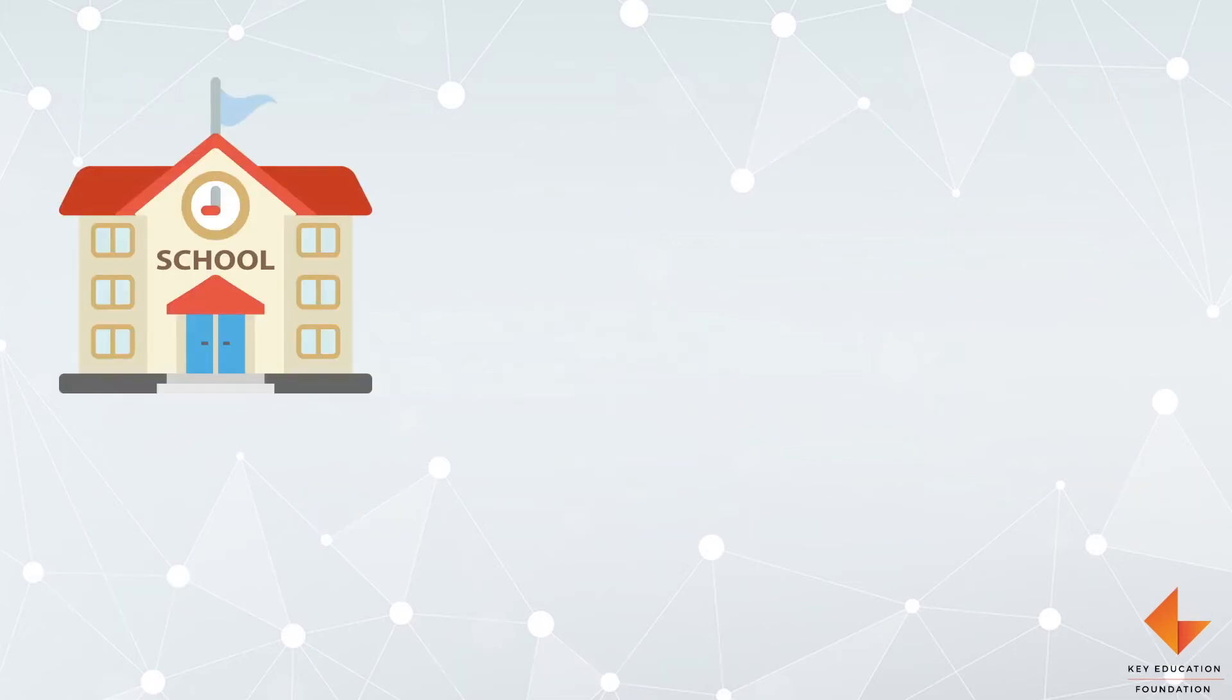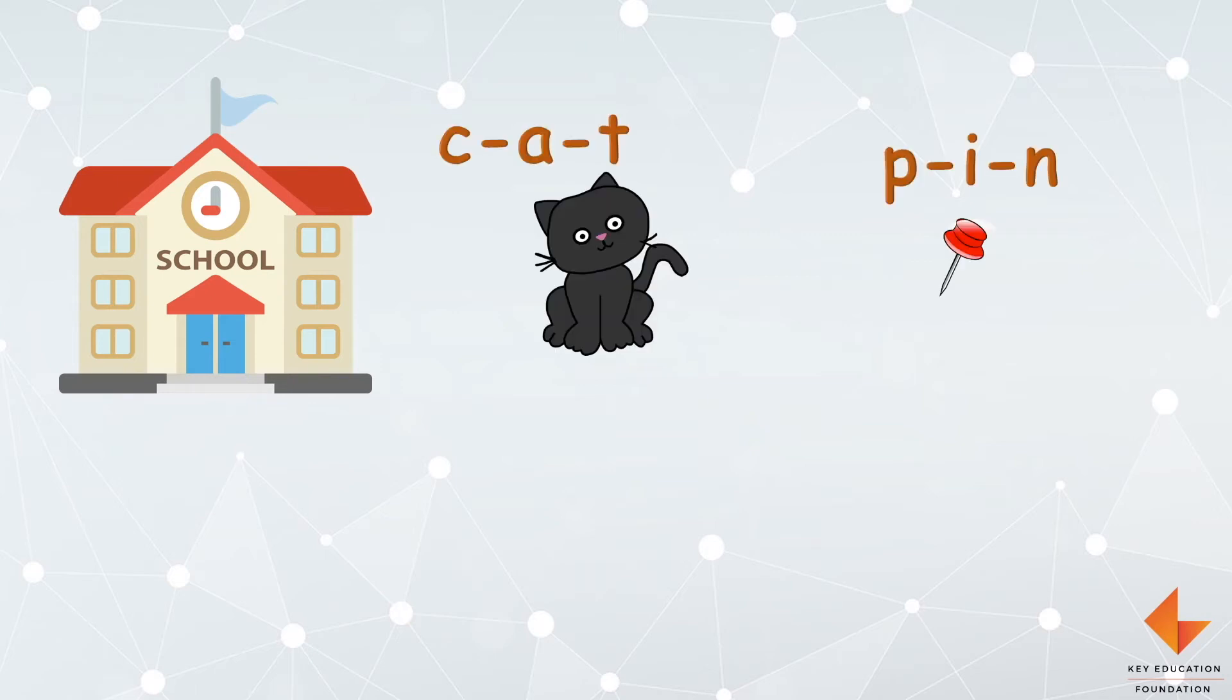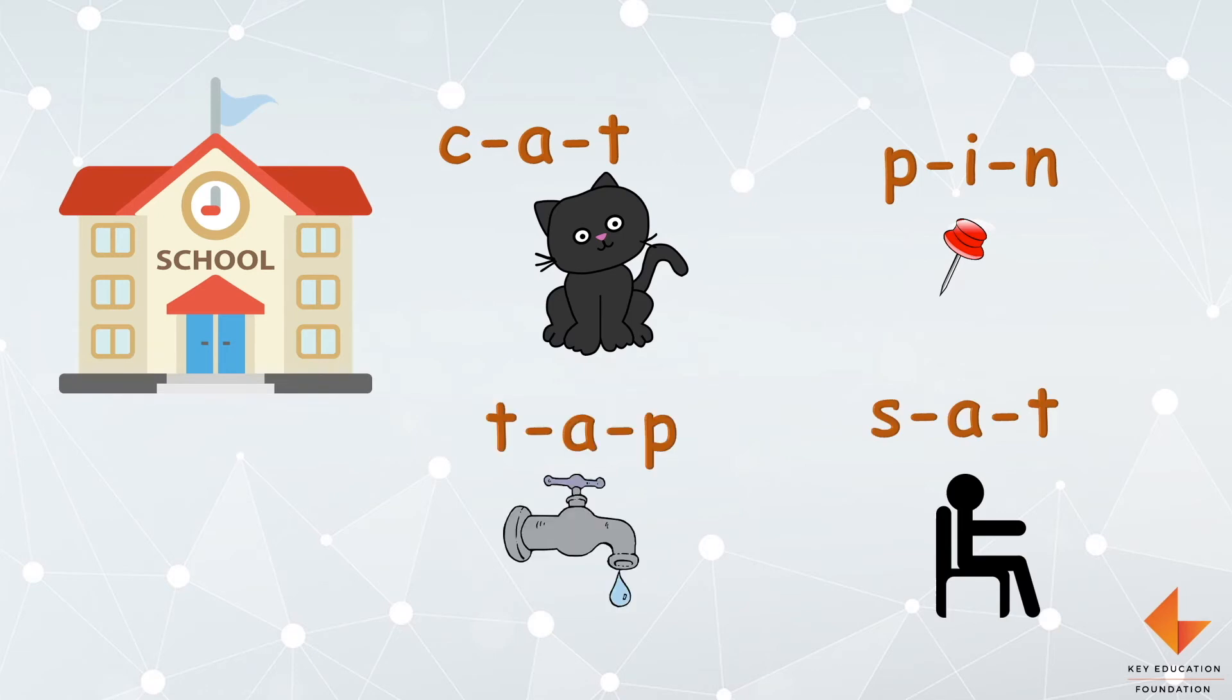When children start going to school, we combine all of these things together as we teach letter sounds and how to join them and show them pictures. Showing pictures increases their vocabulary even more and joining sounds help them to learn reading.